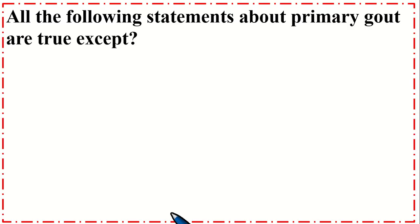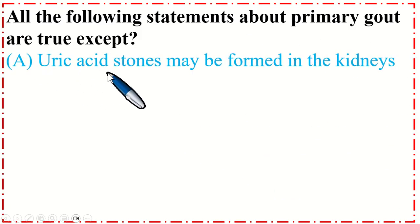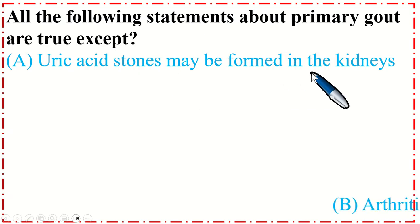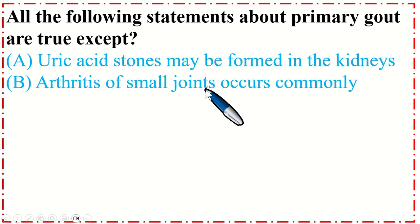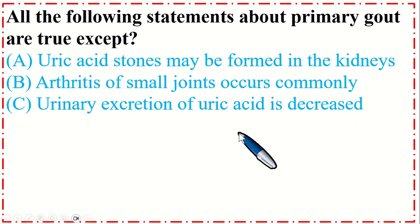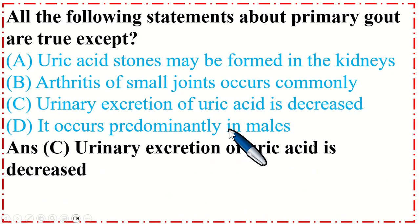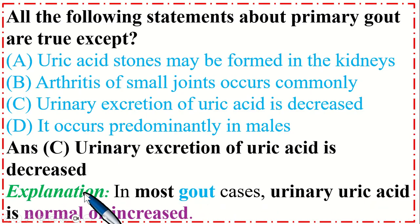Dear students, this is a very important MCQ. All of the following statements about primary gout are true EXCEPT: A. Uric acid stones may be formed in the kidneys; B. Arthritis of small joints occurs commonly; C. Urinary excretion of uric acid is decreased; D. It occurs predominantly in males. The correct option is C — in most gout cases, urinary uric acid is normal or increased.